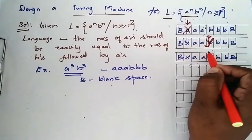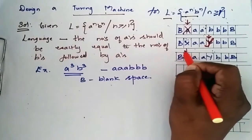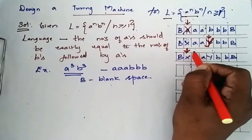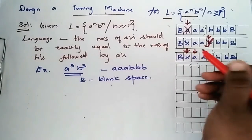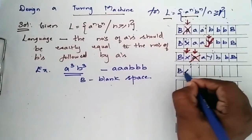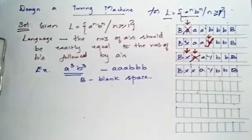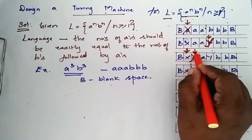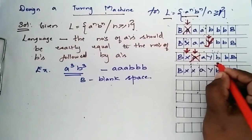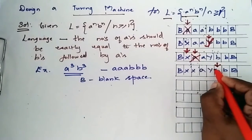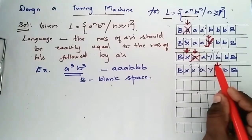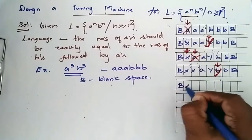When the tape header moves left, it moves left and stops when it encounters an 'x'. When it encounters 'x', it moves right and stops at the next 'a'. This 'a' is replaced by 'x'. Now the header moves right again until it reaches the next 'b', and that 'b' is replaced by 'y'. After replacing 'b' by 'y', it moves left again.